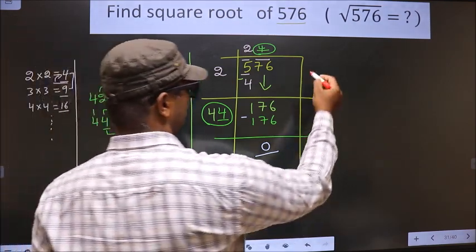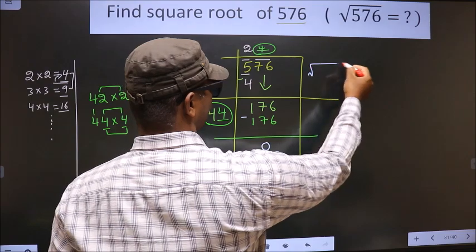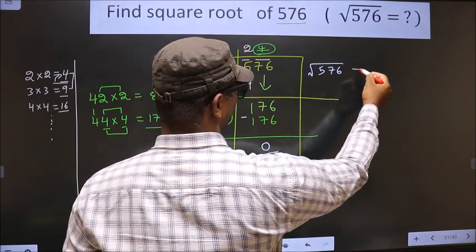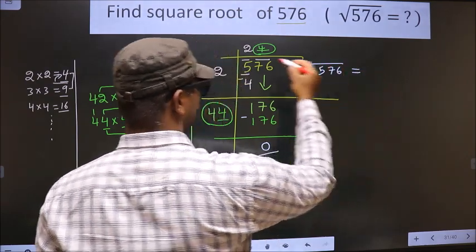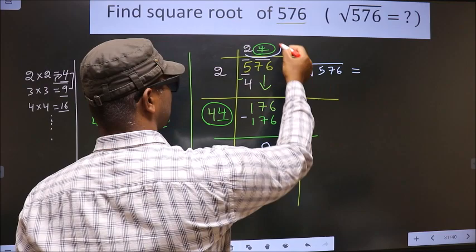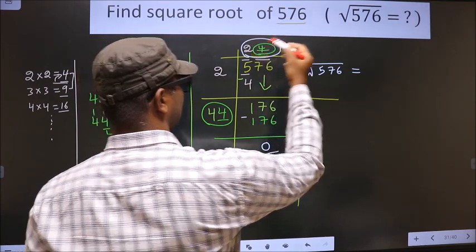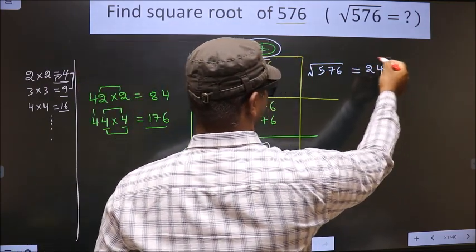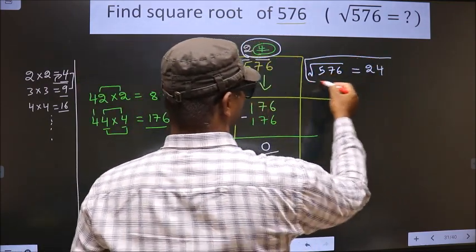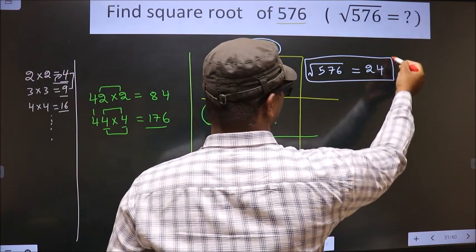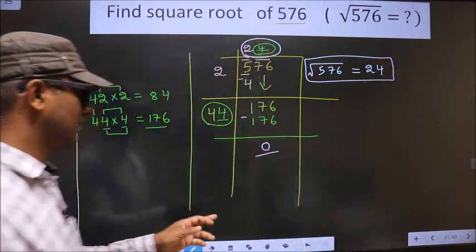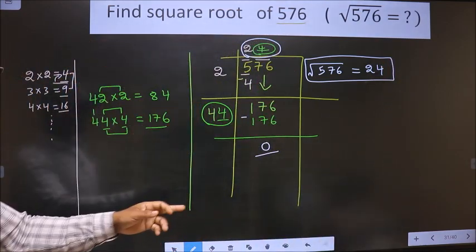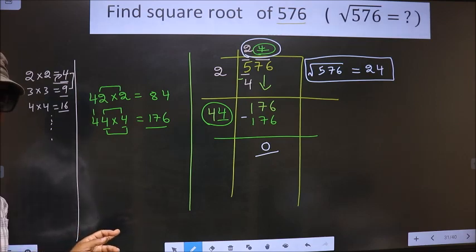Now subtract: 176 minus 176 is 0. We got 0, which means the given number is a perfect square. The square root of 576 is 24. This is our answer.